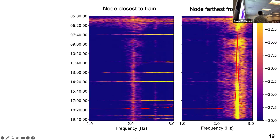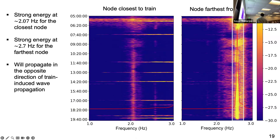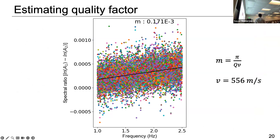This is the spectrogram of the node closest to the train and the node farthest from the train. For the closest one, you see a signature at 2.07 Hz — actually generated by the wind turbine group on the east side. That propagates in the same direction as the train, so it decays on the farthest trace. But in the node farthest from the train, there is a spikier signature around 2.7 Hz, generated by the other group of wind turbines, which is stronger because it has more wind turbines. We can't use that signature because it propagates in the opposite direction from the train arrival and would give us a wrong attenuation estimate. Based on that analysis, we chose a frequency band of 1 to 2.5 Hz.